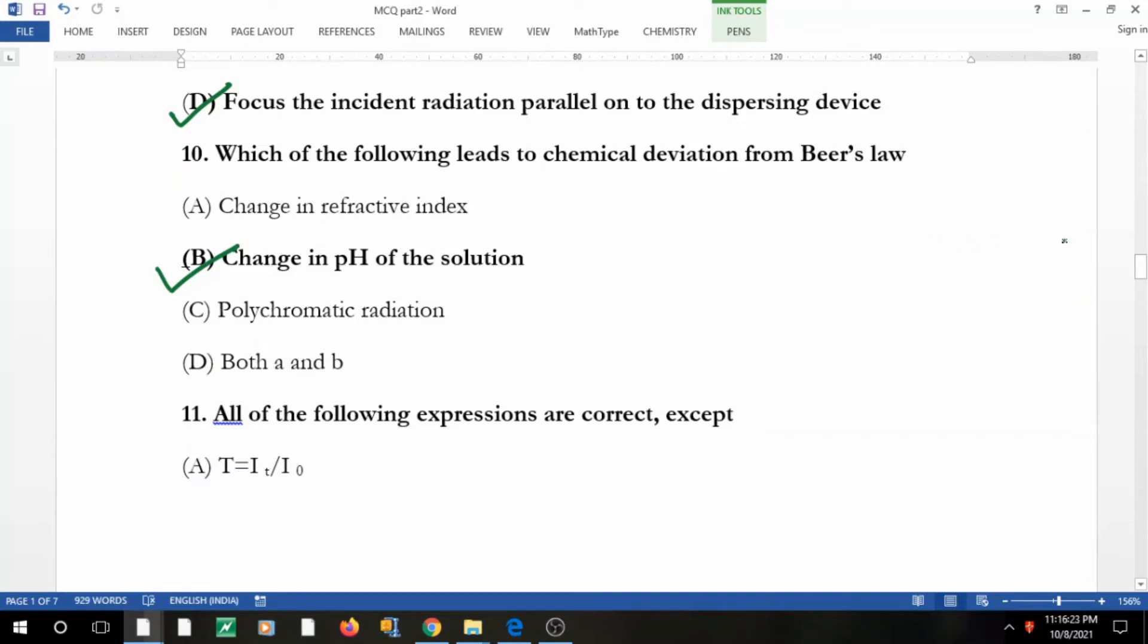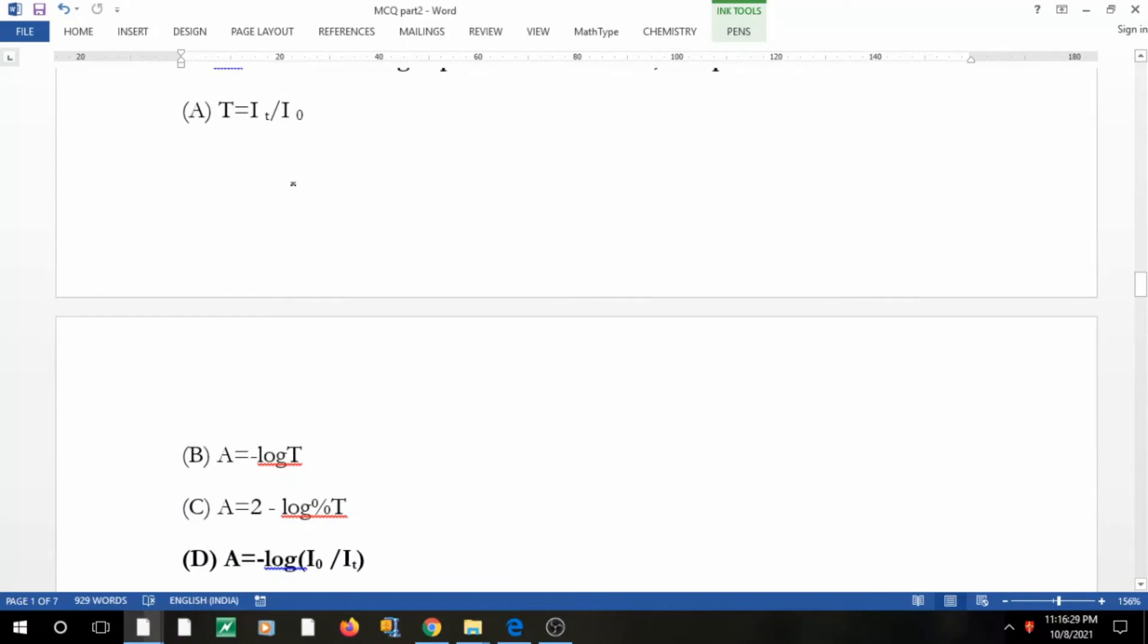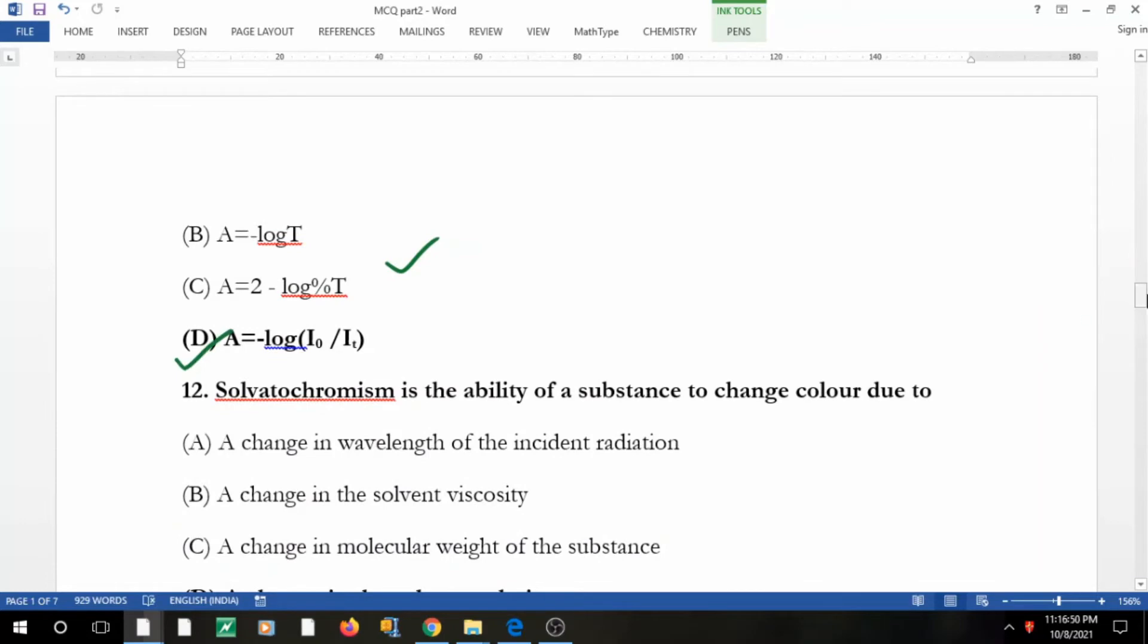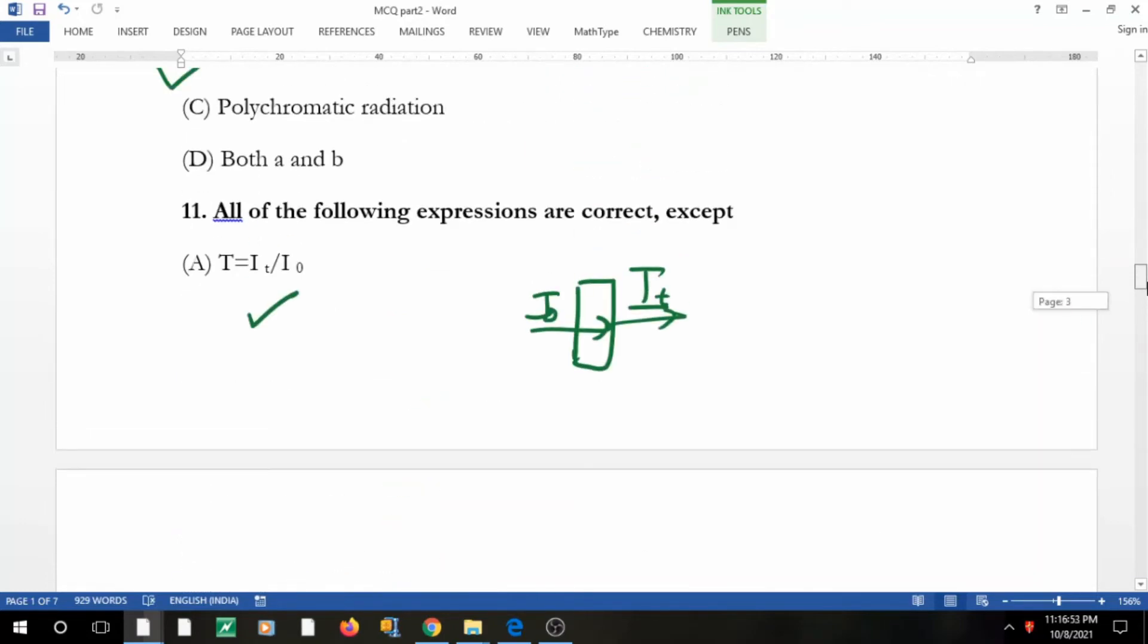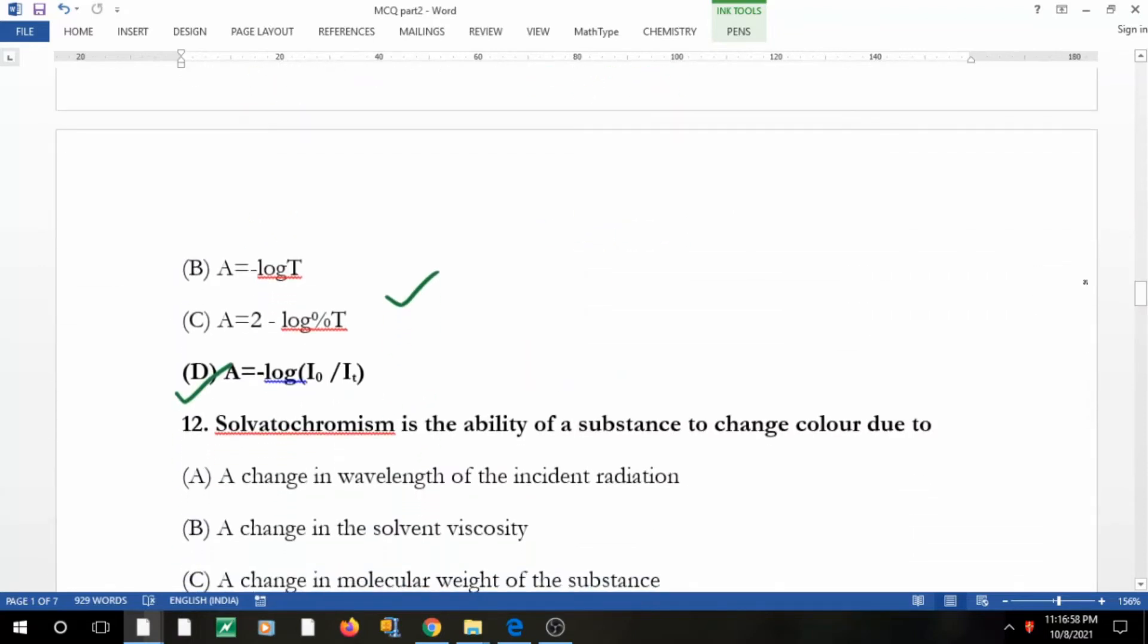All of the following expressions are correct except: transmittance is I_t by I_0? If you have a cuvette with incident light I_0 and exit light I, definitely transmittance is I_t by I_0. A is equal to minus log T, or 2 minus percentage log T. This also I have derived in previous videos. This one is wrong—they are saying except, right? Minus log I by I_0, not this. And if they have used minus then reverse it.